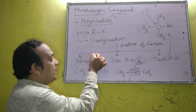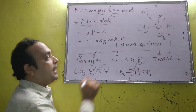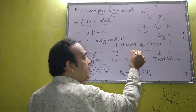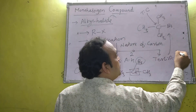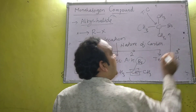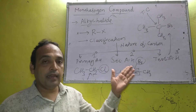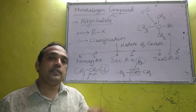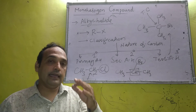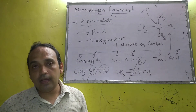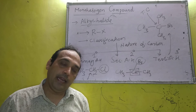CH3CHBrCH3: Br is attached to a carbon bonded to two other carbons — secondary carbon, so this is a secondary alkyl halide. Primary alkyl halide is called first-degree alkyl halide; secondary alkyl halide is called second-degree alkyl halide. This is the first part of the topic — classification of halogen derivatives of alkane.